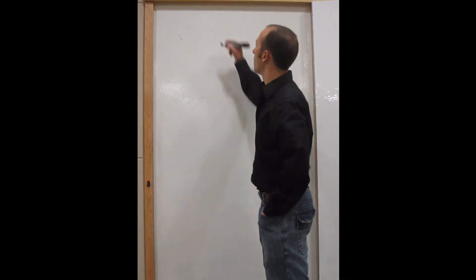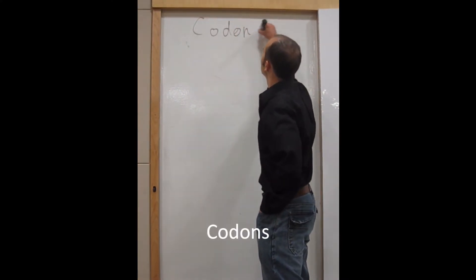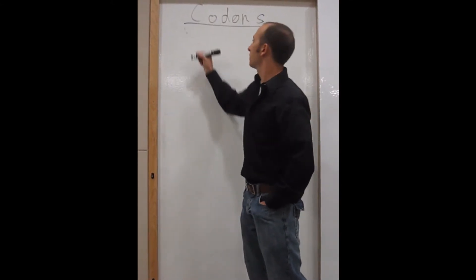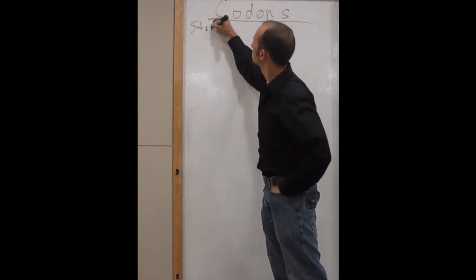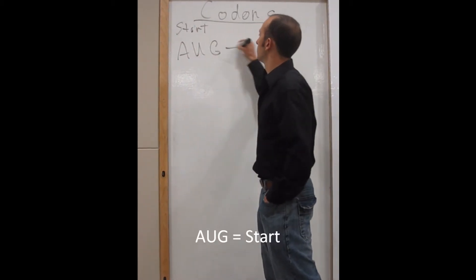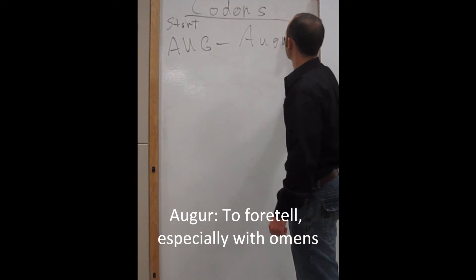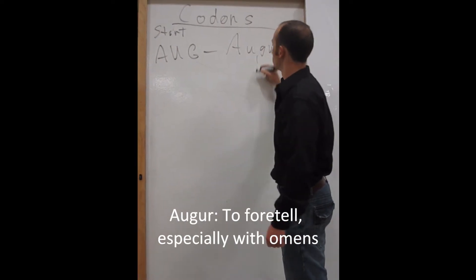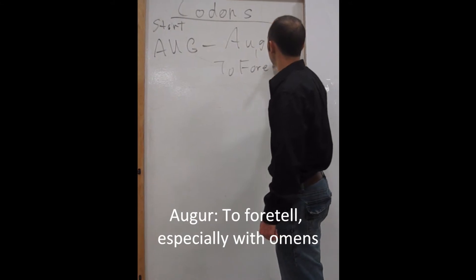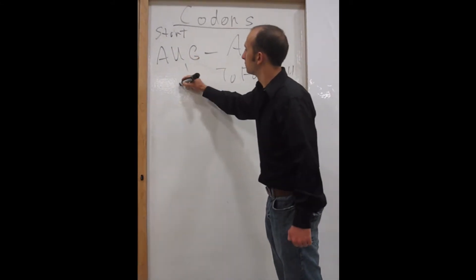Today's lesson is codons. Let's start with the start codon: A-U-G. Think of this as coming from the word 'auger,' which Webster's Dictionary will tell you means to foretell. So A-U-G foretells the start of your protein.